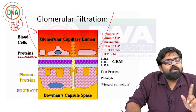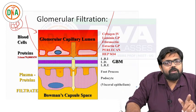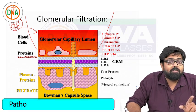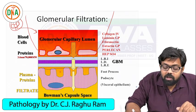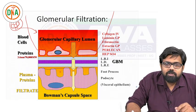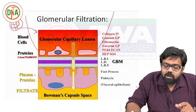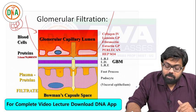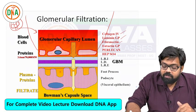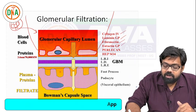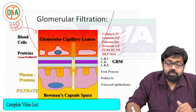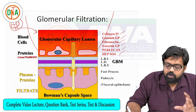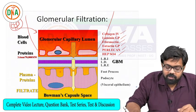Type 4 collagen has alpha 1, alpha 2, alpha 3, alpha 4, and alpha 6 chains. The most common trimer is alpha 1, alpha 2, and alpha 1. Other substances forming the glomerular basement membrane include collagen type 4, laminin, fibronectin, entactin, perlecan, and heparan sulfate. These are all the substances that build up the glomerular basement membrane.